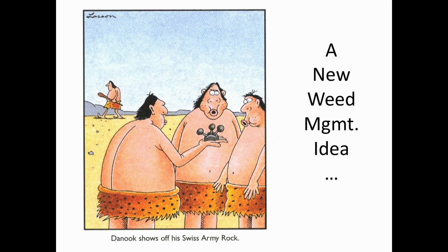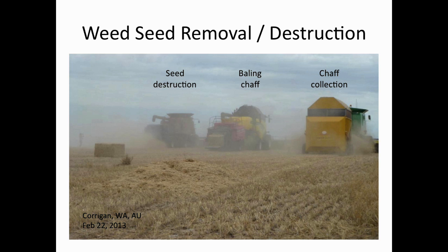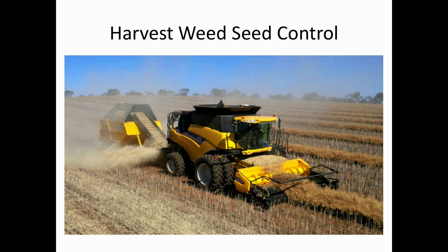I'm going to show a new harvest management technique—the one developed in Australia. The Harrington Weed Seed Destructor is basically a coal-mine-type piece of equipment that grinds up material. You put it on the back of a combine, collect the chaff—most of the weed seeds are in the chaff—grind them up so they're not viable anymore, and spread out the residue. It works very well in Australia because the two weeds they're most interested in are held very tightly through harvest. They also bale chaff and collect chaff. That chaff collector was invented in Canada, by the way, and they've adapted it.